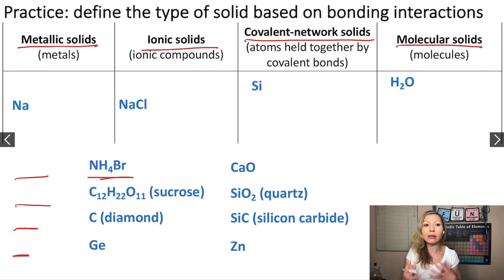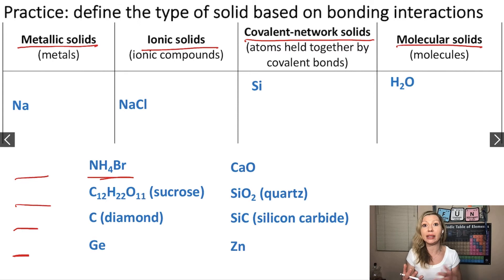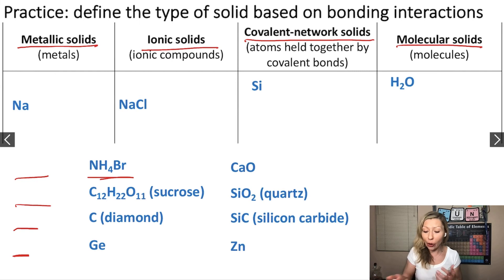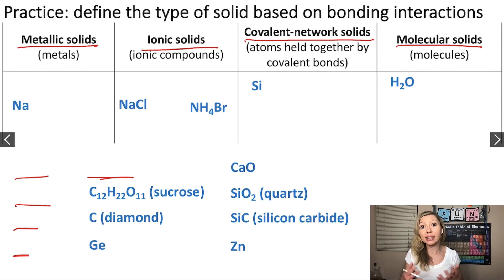What about ammonium bromide? What type of compound is this? Do we have a metal together with a non-metal? We don't. But what is NH4? That is the ammonium ion. Usually we find ionic solids when we have metals coupled with non-metals — like Na+ and Cl-. In this case, the ammonium ion NH4+ replaces our metal. So this is actually a polyatomic ion, and it's going to be an ionic solid. Similarly, sodium sulfate has a polyatomic sulfate ion, which would again be an ionic compound.